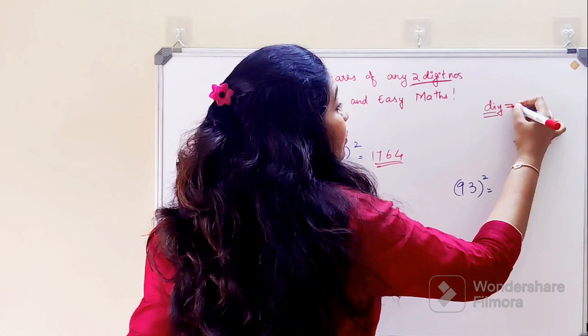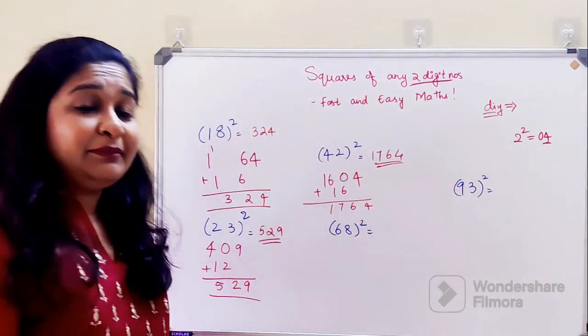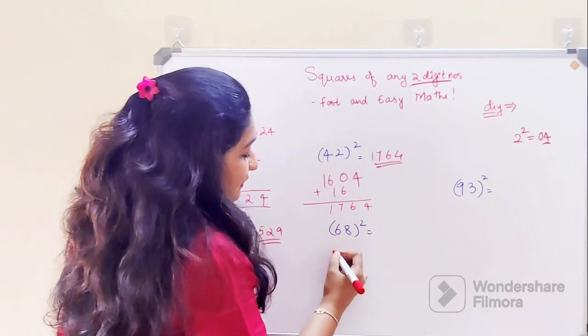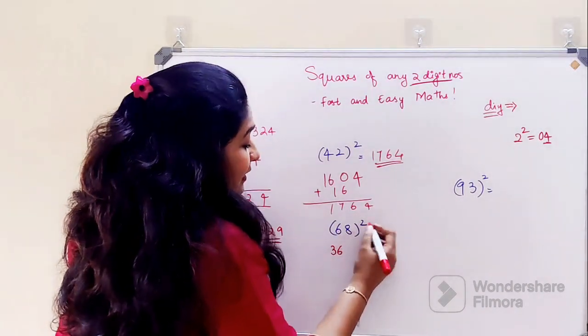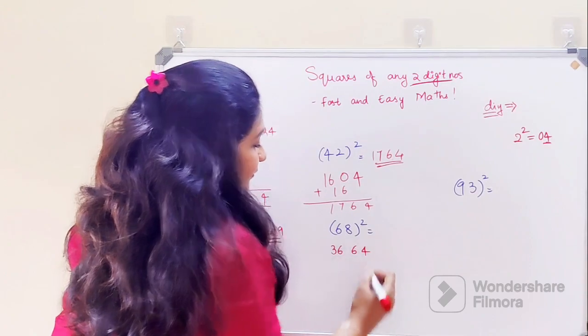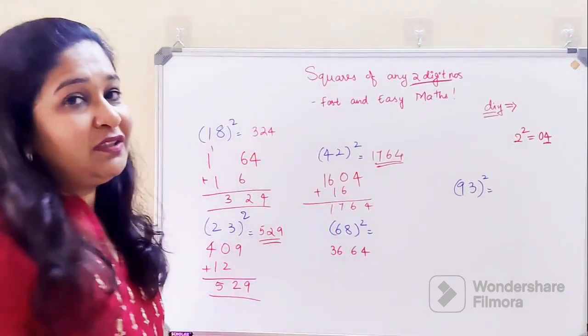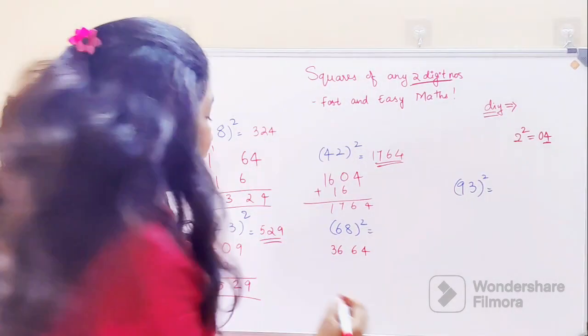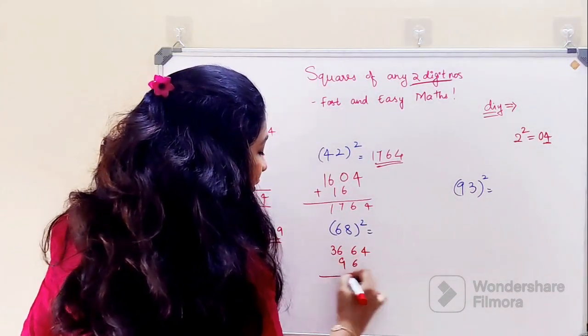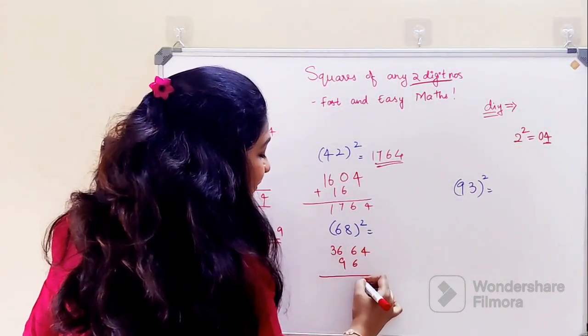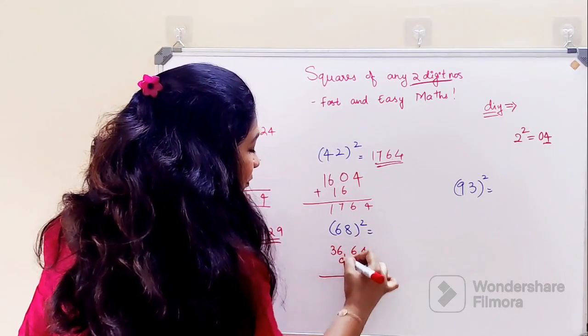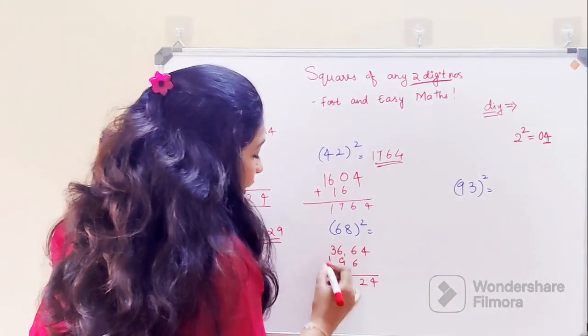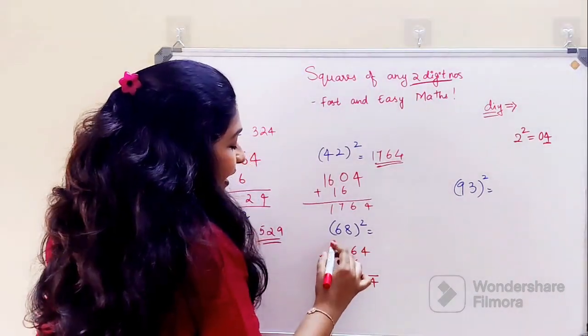Now here, see: 6 square is 36, 8 square is 64. What you have to do is just multiply: 6 into 8 gets you 48, into 2 gets you 96. Now just add: 6 plus 6 gets you 12 plus 1, so 9 plus 1 is 10 plus 6 gets you 16 and 1. We have 3 plus 1 which is 4. So the answer for 68 square is 4624.